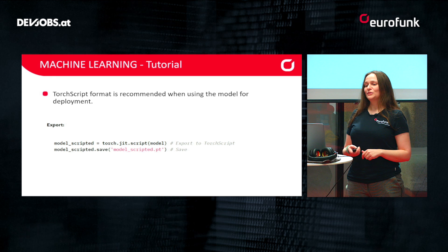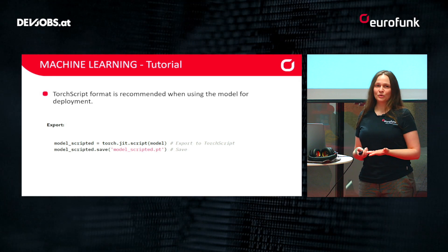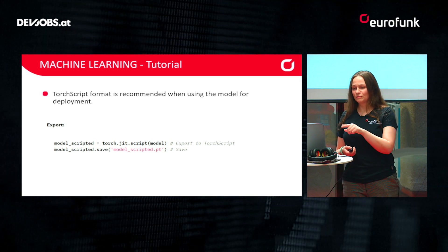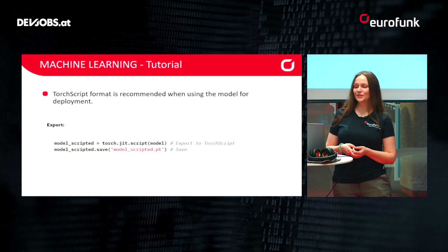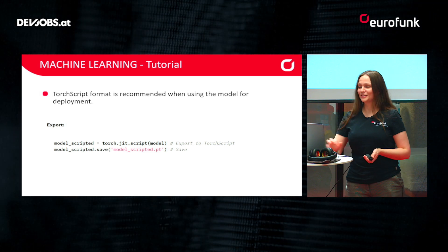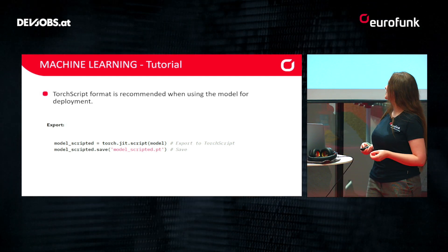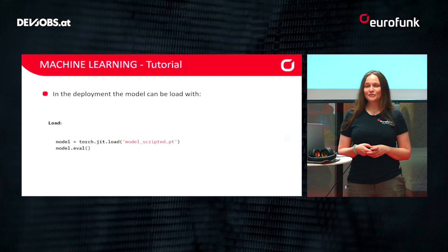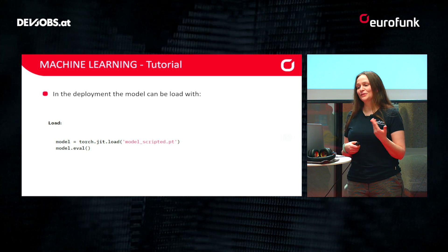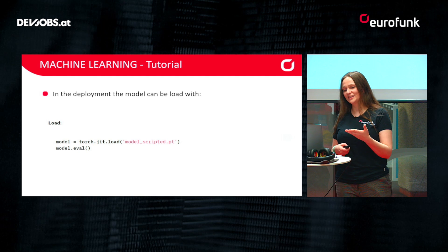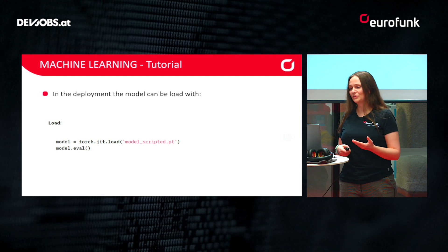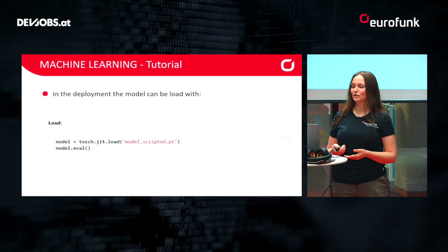With TorchScript, you can simply store your model and then use it later in deployment, but you cannot train it again or refine it. You can export it and save it — here it's called 'model_scripted'. Later, when you want to deploy it in your program, you load it and then switch the model to eval mode. This is needed because when you switch to evaluation mode, it drops out the dropout and batch normalization layers — those layers are needed for training but you want to get rid of them when using your model in practice.